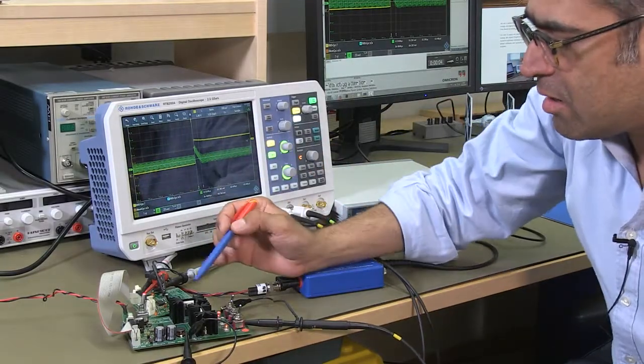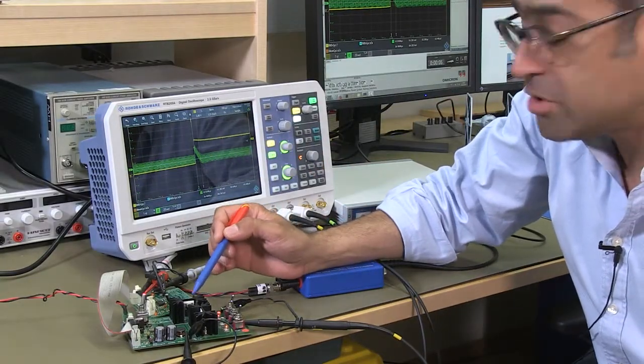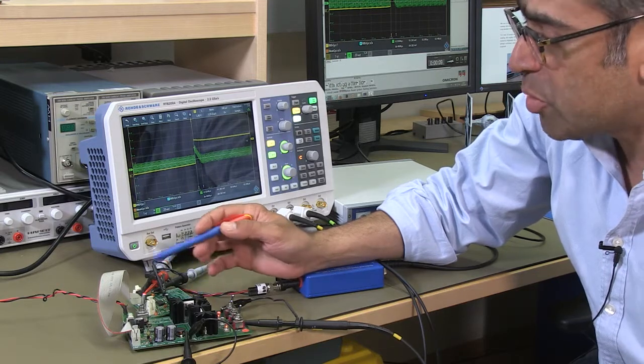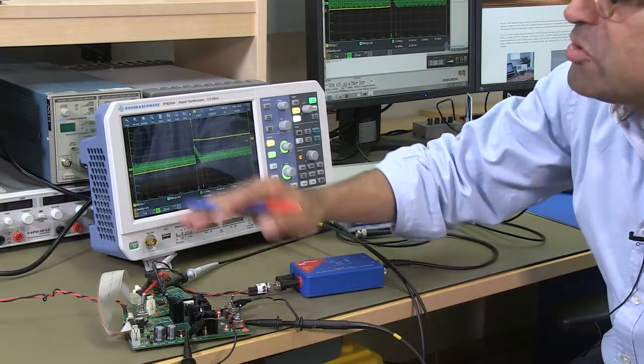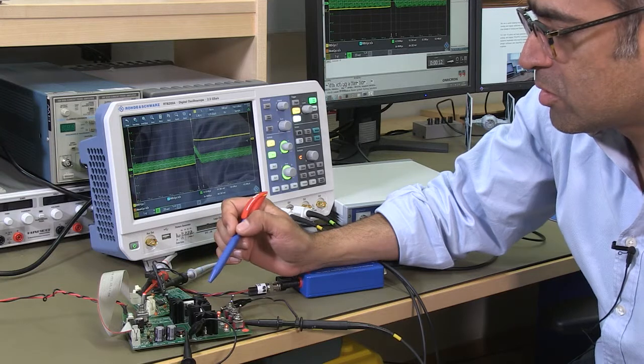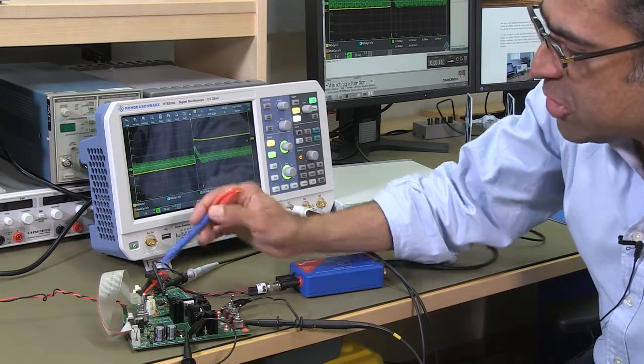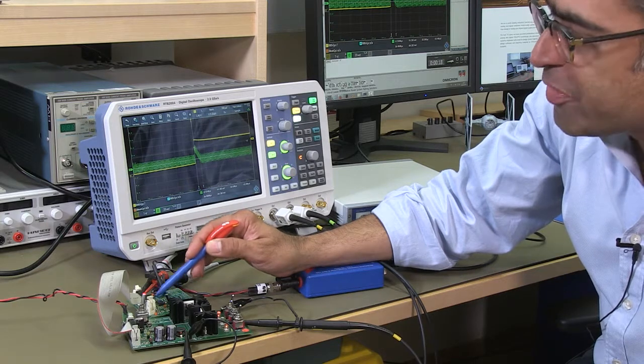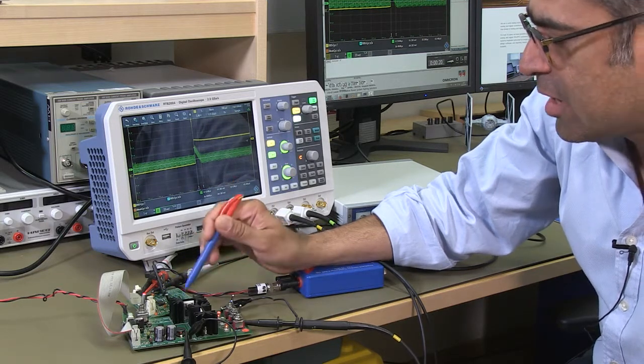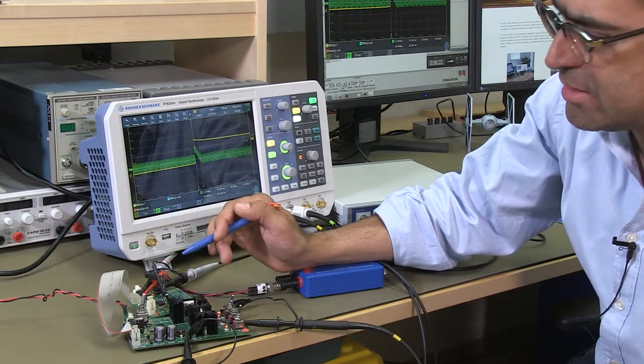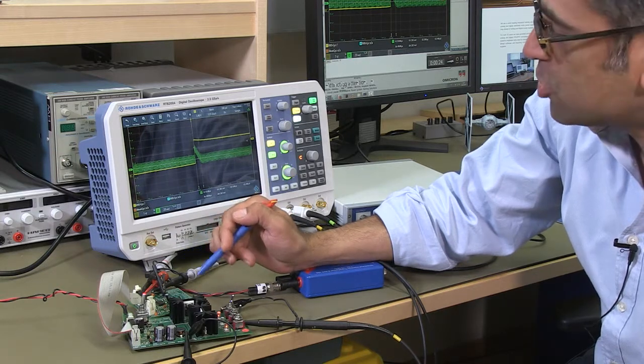Here I have got a non-synchronous buck converter running in voltage mode. This is a type of setup that we have in just one of our hands-on labs in the workshop and it's being controlled by this analog chip at the moment and I have got a crossover frequency of about 10 kilohertz in continuous conduction mode.